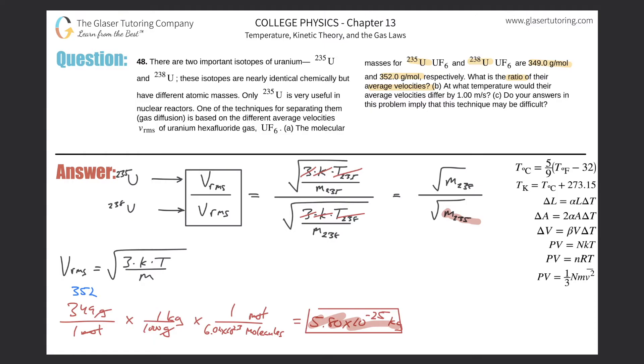But the only difference between the conversion here is simply going to be this number. Instead of 349, it becomes 352. So 352 divided by 1000 times 6.02 times 10 to the 23rd, and here we have a value of 5.85 times 10 to the minus 25th kilograms. And then this value would be the value we would now plug in for the mass at the top, and then we would do our division.